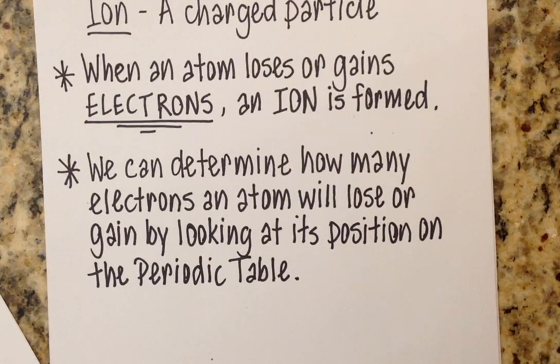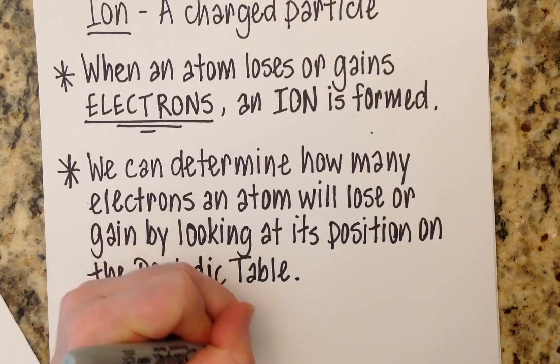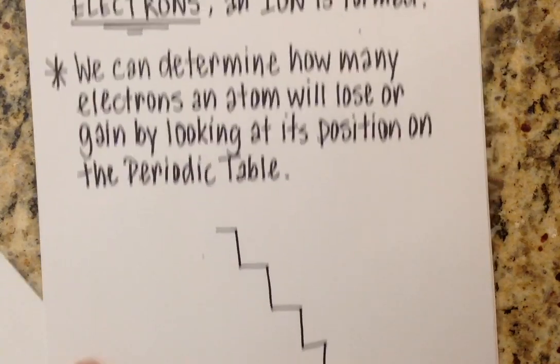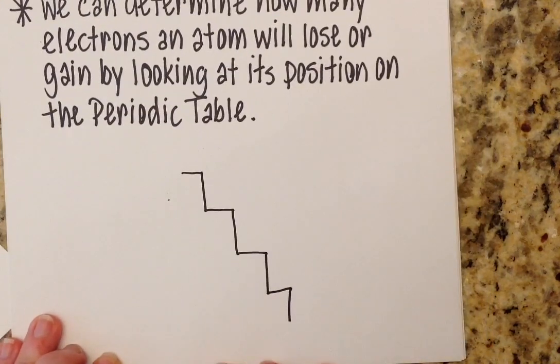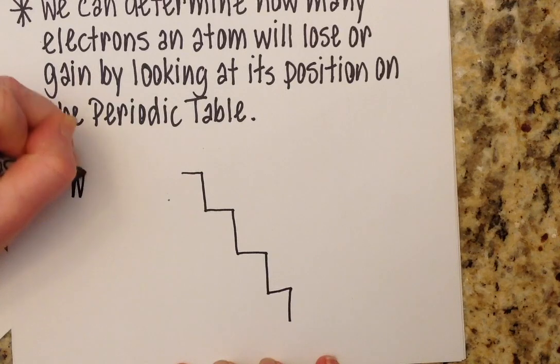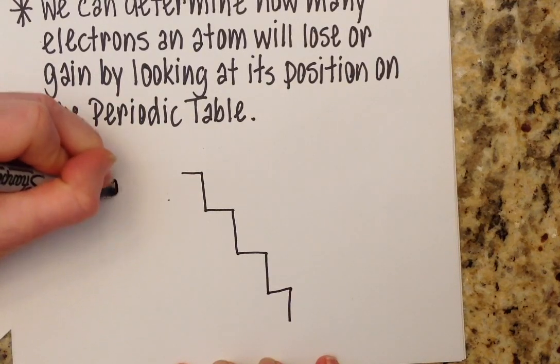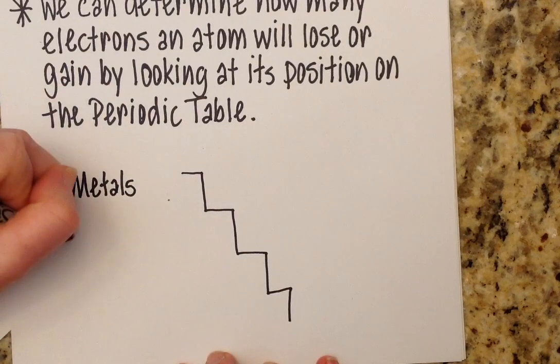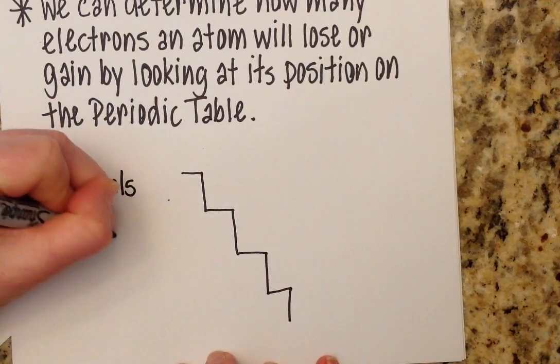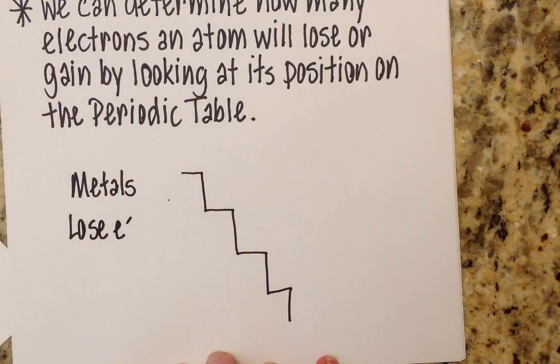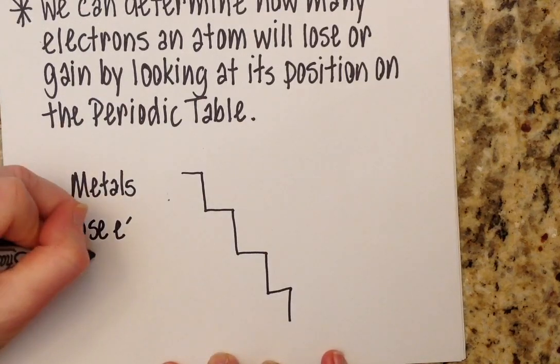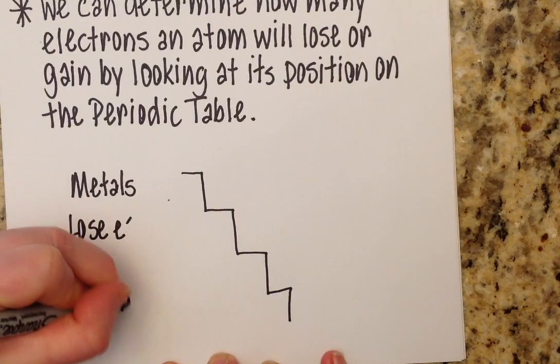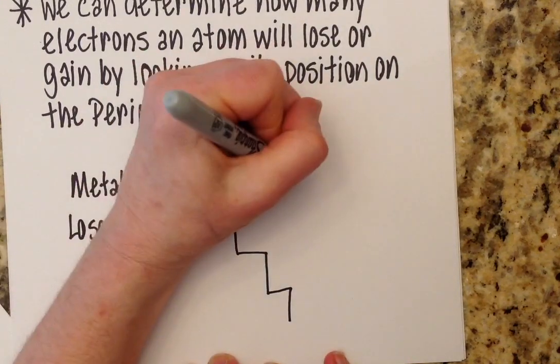So a good way to remember it, especially maybe if you're making your own notes or a note card, you know, maybe just draw some stairs. And you can remind yourself, this is just a good little way to remember it. Metals are on the left. They lose electrons. And when they lose electrons, they become positively charged cations.